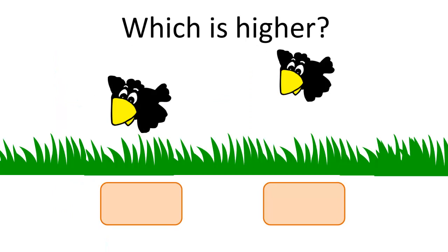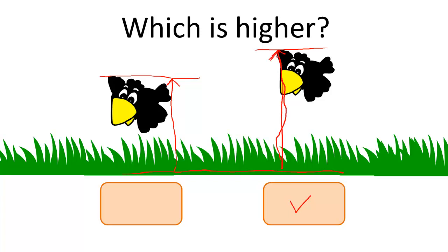Let's look at these two dogs — which dog is longer? Five, four, three, two, one. The answer is the first dog. Drawing a line from nose to tail for each dog, the first dog's arrow is longer than the second. Now: which bird is higher? Five, four, three, two, one. The bird on the right is higher. Drawing an arrow from the grass up to each bird, the second bird's arrow reaches much higher than the first.